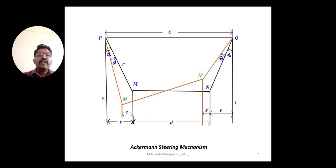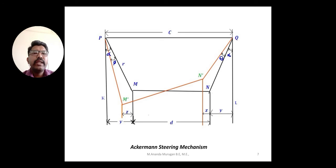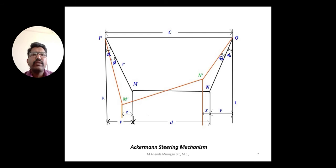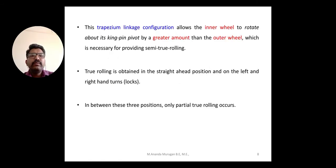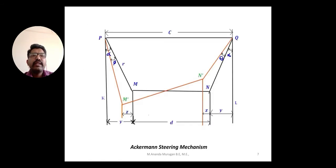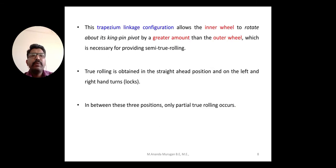Now we can see the Ackerman steering mechanism completely drawn — in a straight position and also in a turning angular position. The black color line represents the vehicle moving in a straight direction, and the orange color line represents the vehicle moving in an angular motion. This complete linkage configuration looks like a trapezium form.